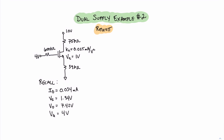Here we can see the circuit that we solved in the second video. In this case, we can see that we have two supplies: a 4-volt supply and a 10-volt supply. But it's possible to use a 4-resistor biasing circuit to modify the left side of this and turn it into a single supply circuit.